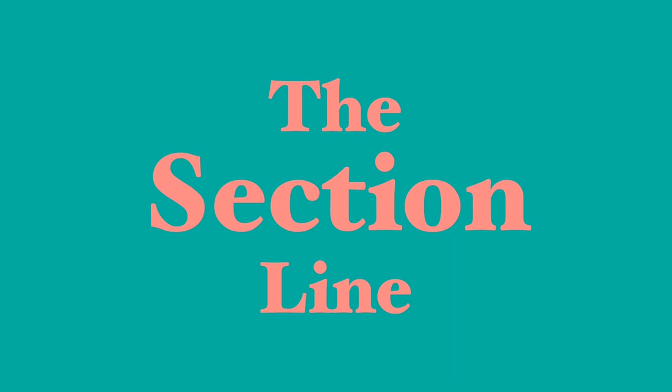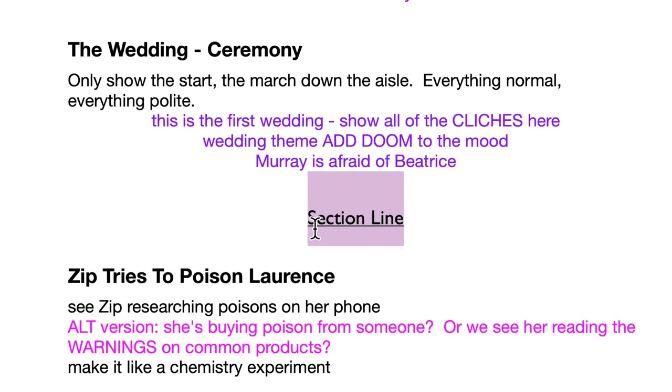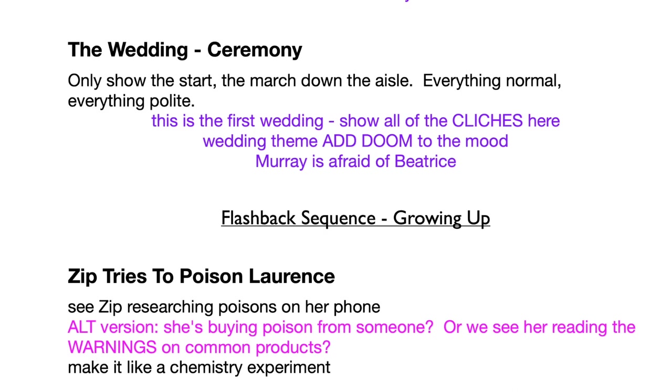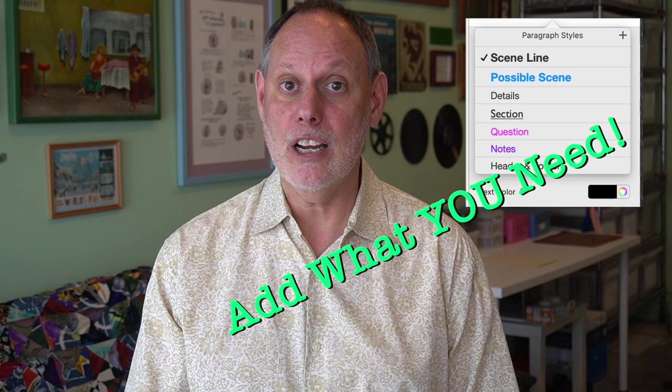And the last element is the section line. You don't use this much, but now and then you do want to break the script into parts. It could be traditional act breaks, or sometimes it's to break out a special sequence or a set of events — like 'flashback sequence growing up' or 'the heist.' So that's your toolkit — just six kinds of line. I think they cover pretty much everything you'd need to outline almost any kind of script. But if you can think of something you need that isn't in there, format another line and add it in. You make it work.